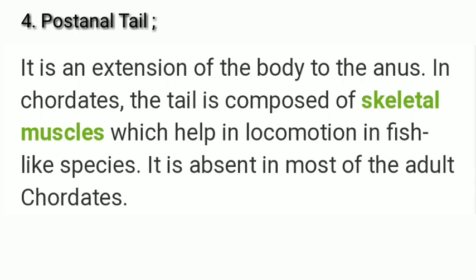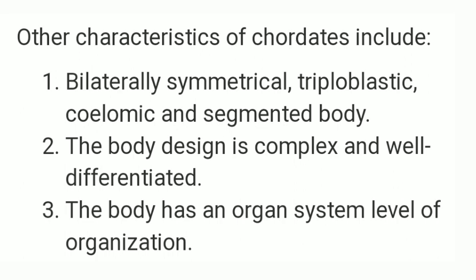The fourth characteristic is the post-anal tail — an extension of the body beyond the anus. In chordates, the tail is composed of skeletal muscles which help in locomotion in fish-like species. It is absent in most adult chordates. Other characteristics include bilateral symmetry, they are triploblastic, coelom is present, and their body is segmented. The body design is complex and well-differentiated, with an organ system level of organization.